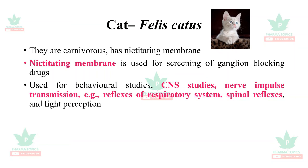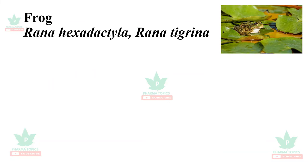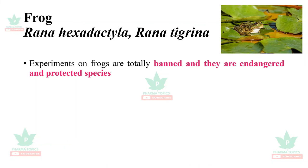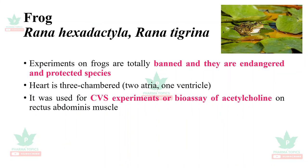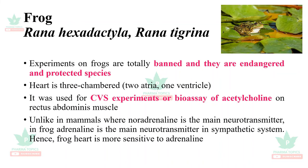The frog, Rana hexadactyla and Rana tigrina, experiments are totally banned as they are endangered and protected species. The frog heart is three-chambered with two atria and one ventricle. It was used for cardiovascular experiments and bioassay of acetylcholine on rectus abdominis muscle. Unlike in mammals where noradrenaline is the main neurotransmitter, in frogs adrenaline is the main neurotransmitter in the sympathetic system, so the frog heart is more sensitive to adrenaline.